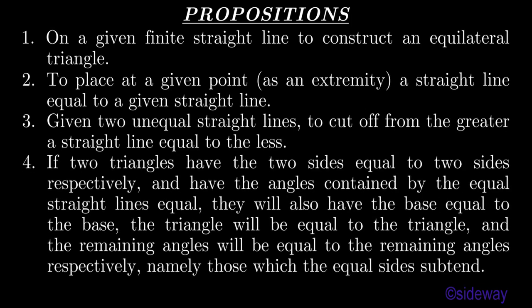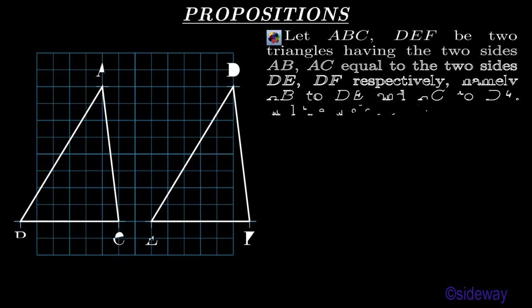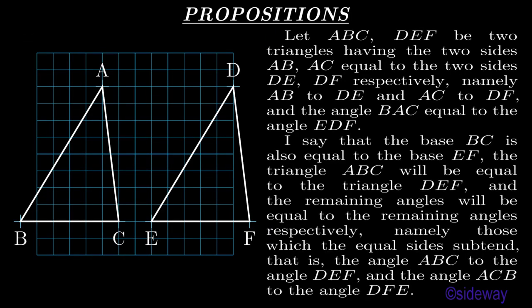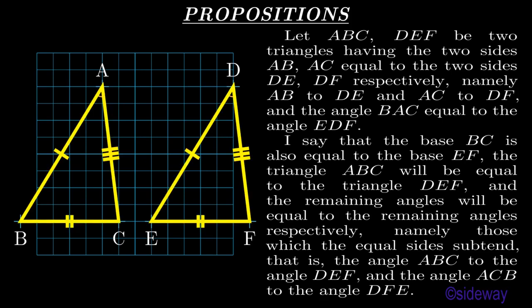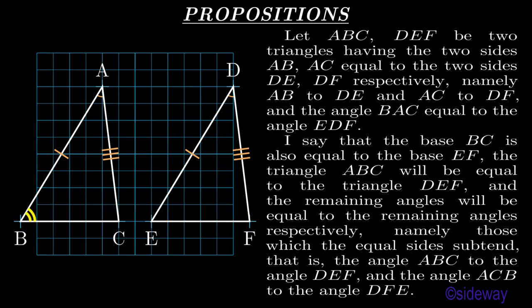Proposition 4: If two triangles have the two sides equal to two sides respectively, and have the angles contained by the equal straight lines equal, they will also have the base equal to the base, the triangle will be equal to the triangle, and the remaining angles will be equal to the remaining angles respectively, namely those which the equal sides subtend. Let ABC and DEF be two triangles having the two sides AB and AC equal to the two sides DE and DF respectively, namely AB to DE and AC to DF, and the angle BAC equal to the angle EDF. I say that the base BC is also equal to the base EF, the triangle ABC will be equal to the triangle DEF, and the remaining angles will be equal to the remaining angles respectively, namely those which the equal sides subtend — that is, the angle ABC to the angle DEF, and the angle ACB to the angle DFE.